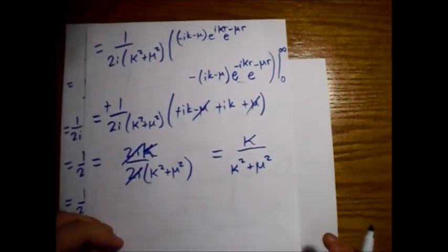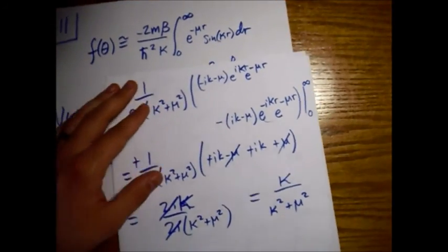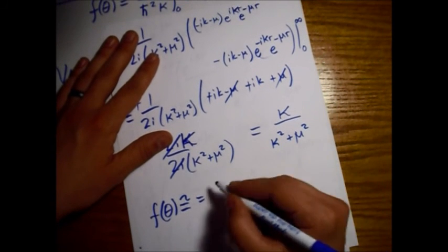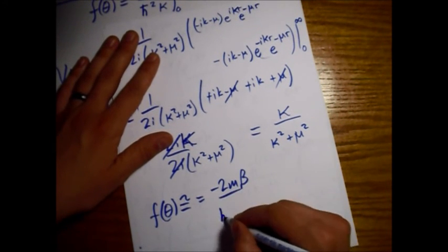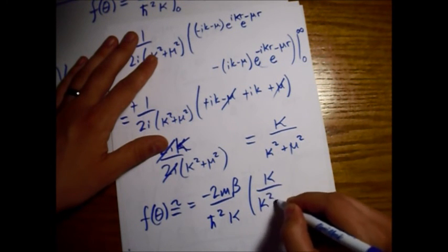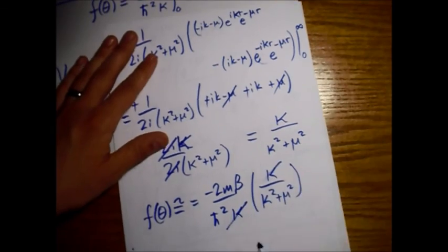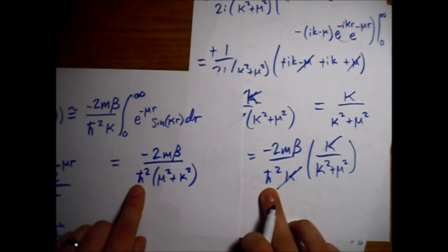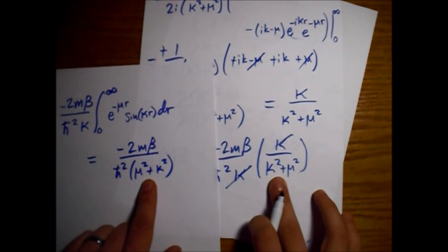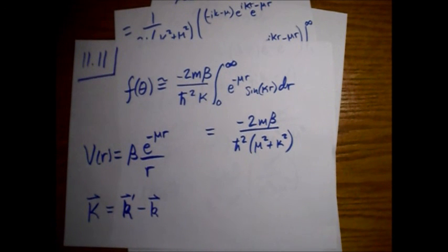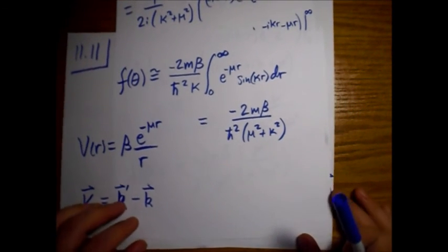Now that we have this integral done — that's just this little piece right here — when we plug this back into our scattering amplitude, we have minus 2m beta over h-bar squared times kappa, multiplied by the result from the integral: kappa over kappa squared plus mu squared. The kappas cancel, and we are left with minus 2m beta over h-bar squared times one over mu squared plus kappa squared. Maybe not the most physically illustrative problem, but we confirm the integral. See you next time.